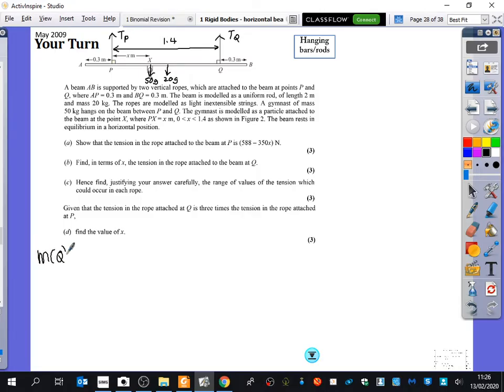When I take moments about Q, I have to be really careful about all of my distances. So the two forces working together are the 20g and the 50g. So you're going to have 20g multiplied by what? Good. 20g multiplied by 0.7 because that is halfway of that bit. Now, if this is 1.4 and this is x, what is the distance between here and the 50g? 1.4 minus x. That's 1.4, that's x. So it's 1.4 minus x.